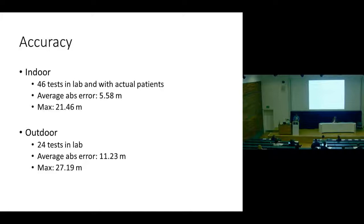Just a little bit about the accuracy of our measurements — they are quite good. In the indoor scenario we've done 46 tests and have an average absolute error of 5 meters and a maximum error of 21 meters, which is well below what is considered the clinically significant threshold. In the outdoor scenario we have similar accuracy — it's a little bit higher because GPS is not very accurate, but it's 11 meters absolute error and 27 meters maximum.